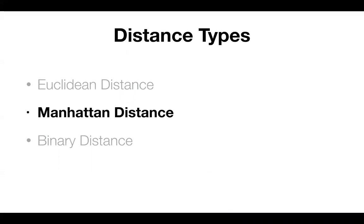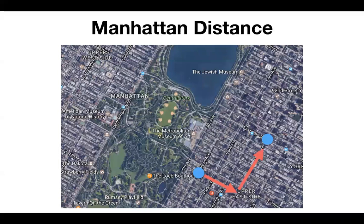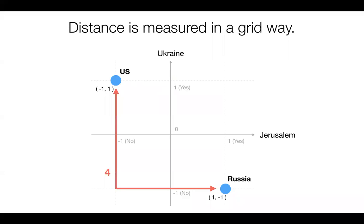The next one is Manhattan distance. As the name suggests, Manhattan is known for a city grid. So instead of going in a straight line, you go only along X or Y — only those two directions. For example, the distance between the US and Russia — you can't go direct because that's not on the grid. So if you follow the grid, you go all the way down and then all the way to the right side to reach Russia from the US.